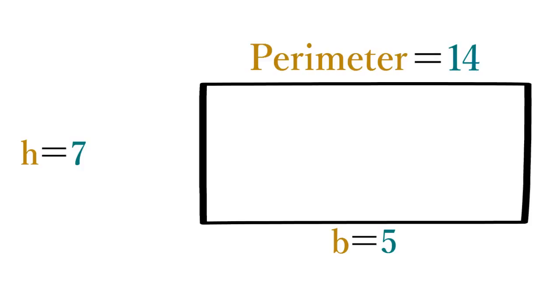And then subtract 7 minus 5 equals 2. So the height of this rectangle equals 2.